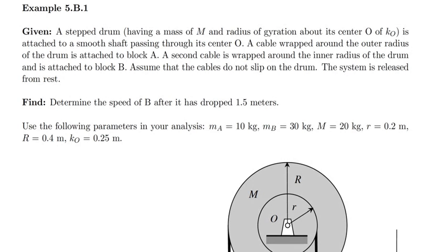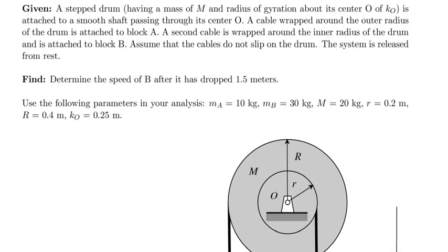In this example we have a stepped drum of mass M and radius of gyration about its center point O of K-naught, which is attached to a smooth shaft passing through its center. We're told a cable that was wrapped around the outer radius of the drum is attached to block A, and a second cable wrapped around the inner radius of the drum is attached to block B.